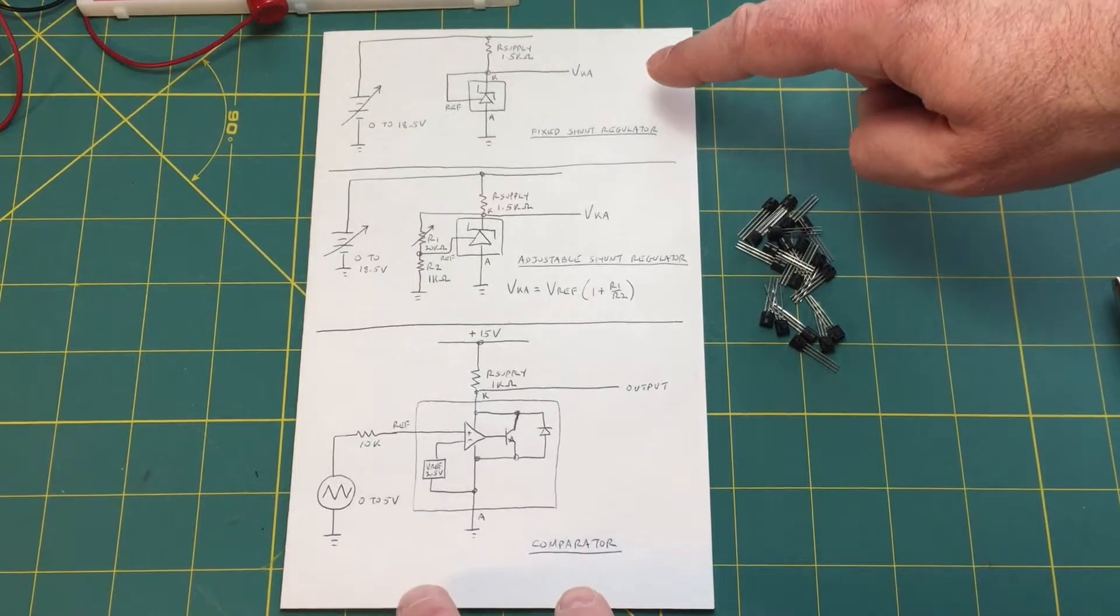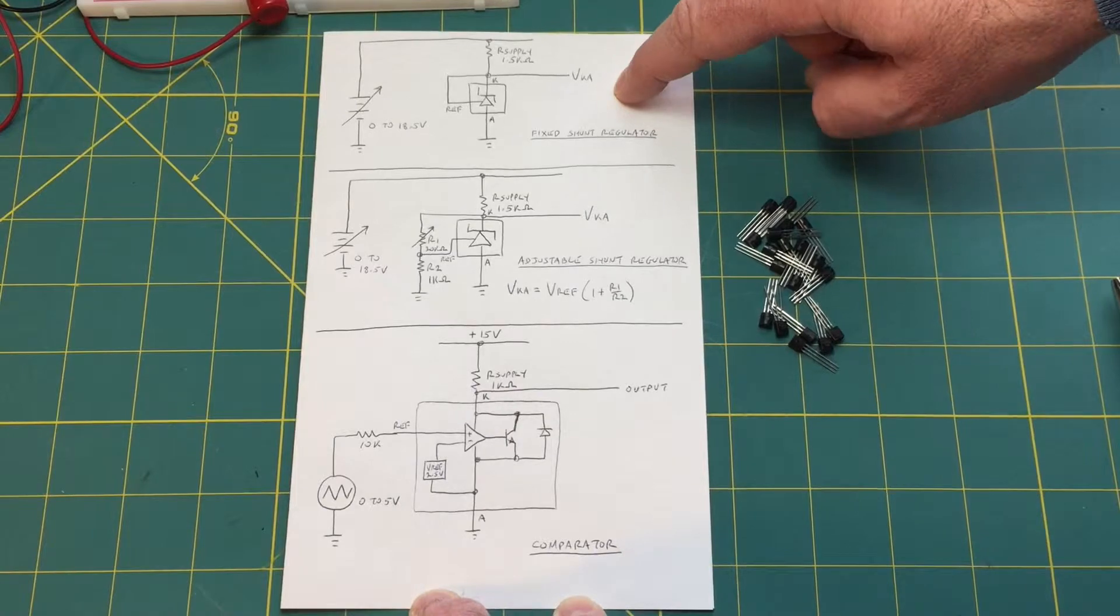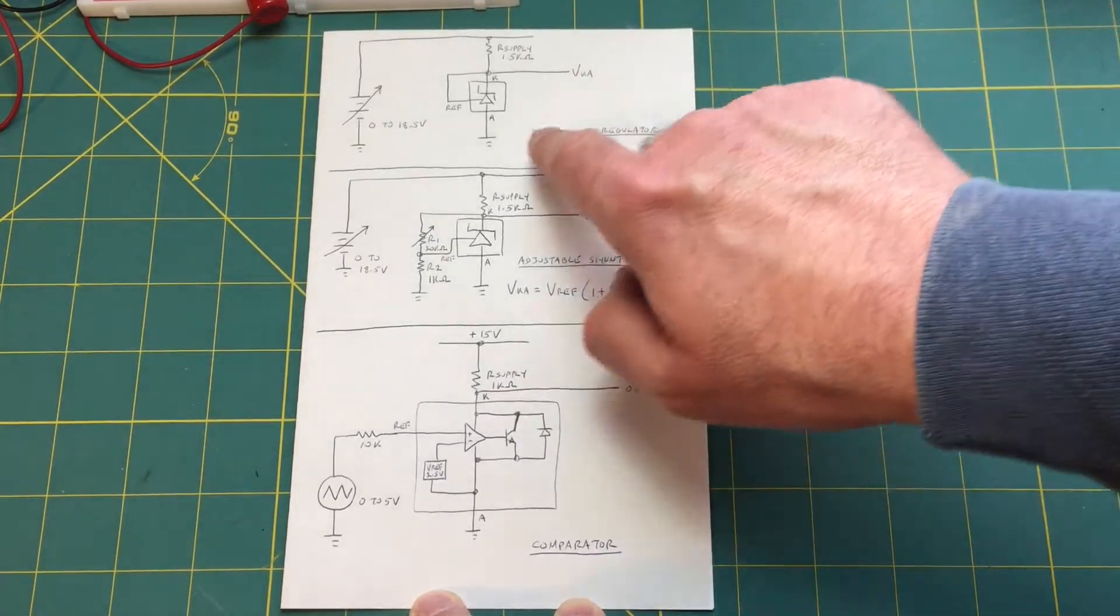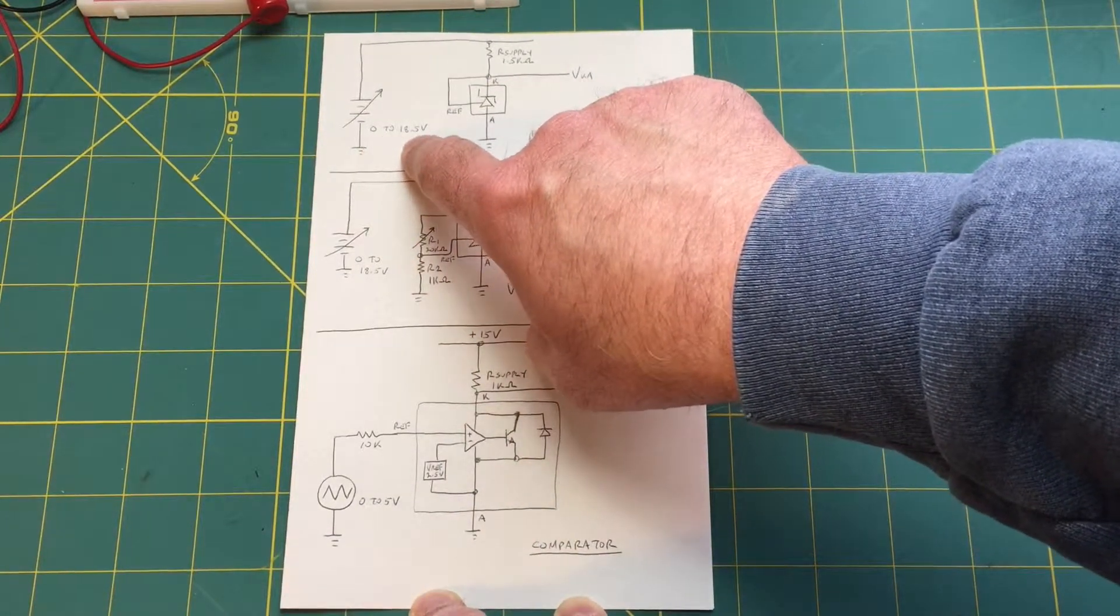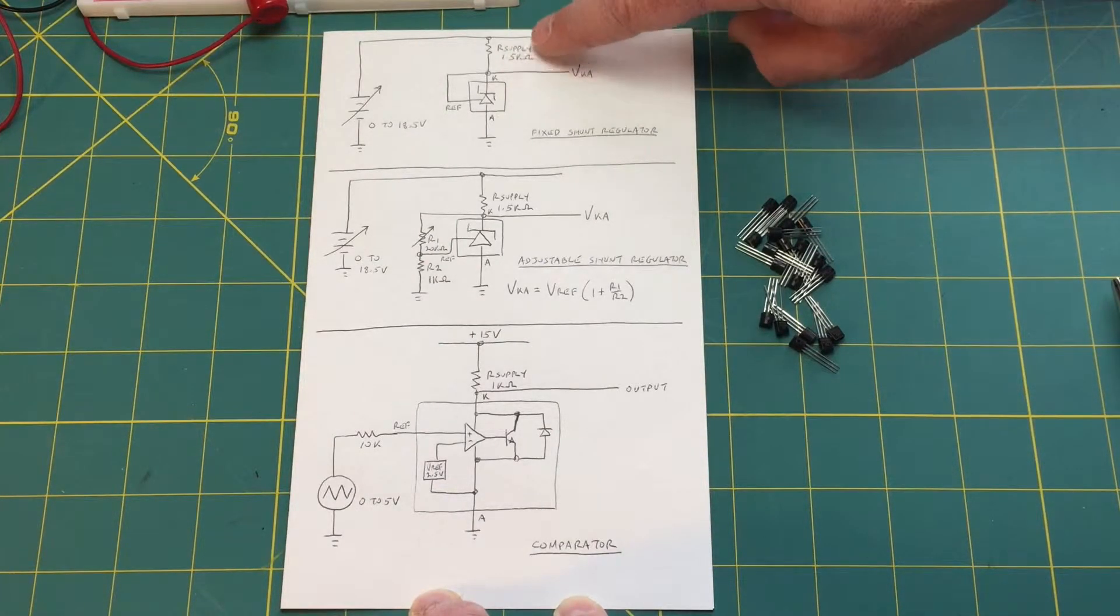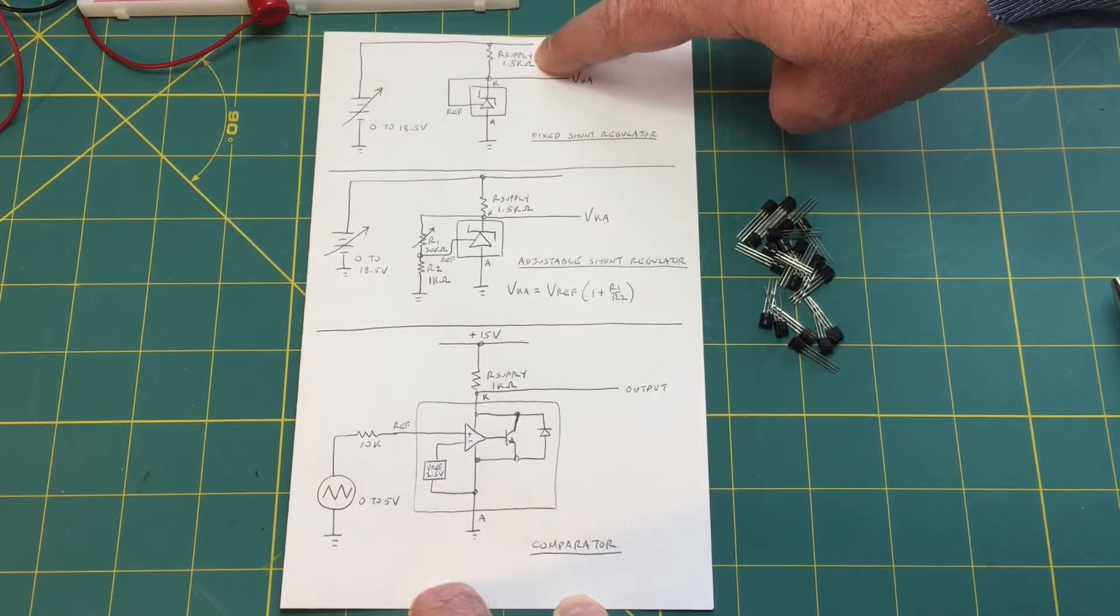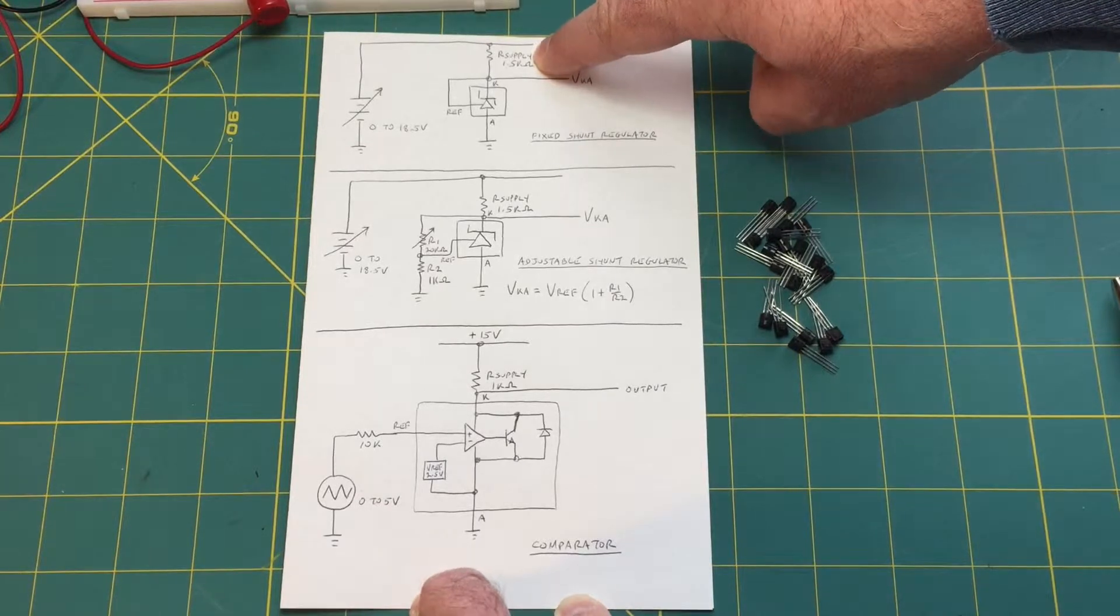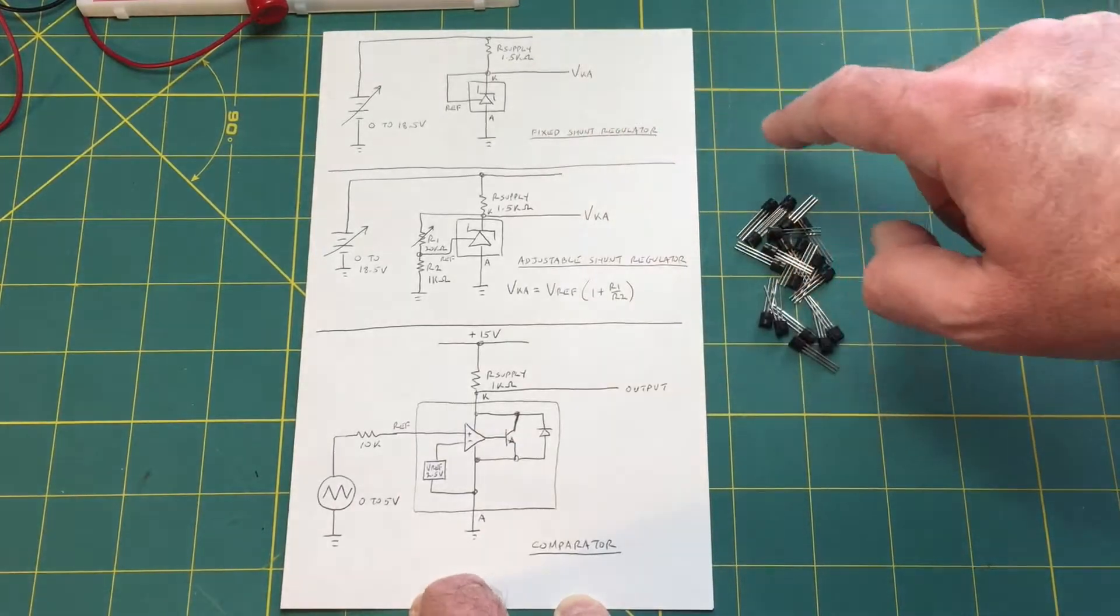These are the three circuits we're going to be experimenting with today. The very first one is going to be a fixed voltage configuration and we're going to have an input voltage we're providing from my bench supply 0 to 18.5 volts. We have a resistor in the cathode leg which we call our supply and in this particular case it's 1.5k. I selected this value because this should be able to maintain the minimum 1 milliamp that the device needs to operate properly.